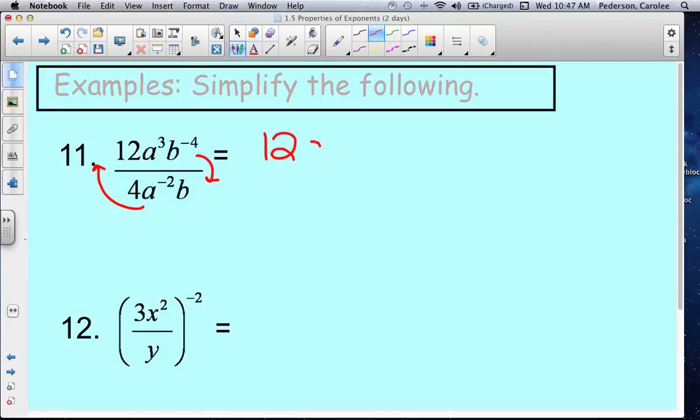So it looks like this. The 12 and the a cubed are still in the numerator, but now I'm going to bring that a to the negative 2 up to the numerator as a squared. Now in the denominator, the 4 stays in the denominator, the b stays in the denominator, and now this b to the negative 4th goes down to the denominator. And now let's clean it up.